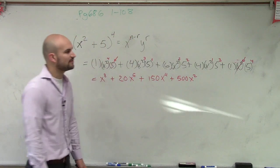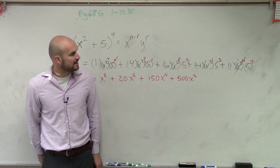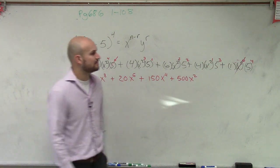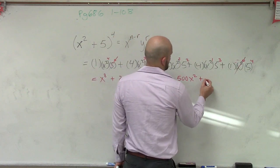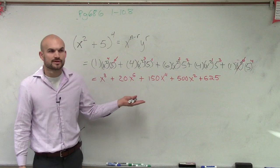x squared squared is going to be x to the fourth. So we have 150 x to the fourth, plus 5 cubed is going to be 125, times 4 is going to be, let's see, 400. So then times 4 would be 500. Now what I'm doing, I'm just simplifying each term. And then 5 to the fourth, so 5 cubed, and then 5 to the fourth would be 625. And there you go. There's your binomial expansion.